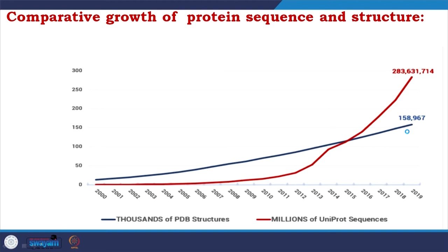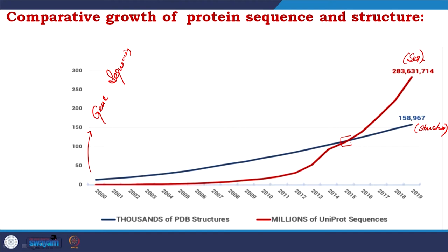Look at the comparative growth of protein sequence versus protein structure data. Initially during the era of gene sequencing, the number of sequences was low because automation was not there. Gradually, the number of sequences increased enormously, and around 2014–2015 sequences surpassed structures by an enormous margin and kept growing.